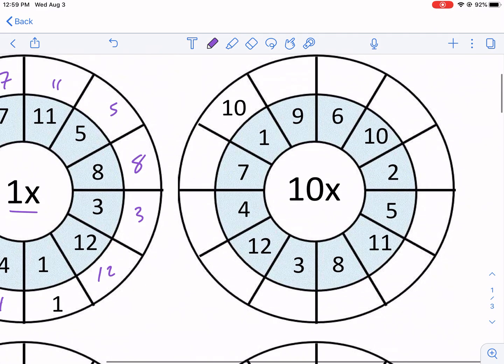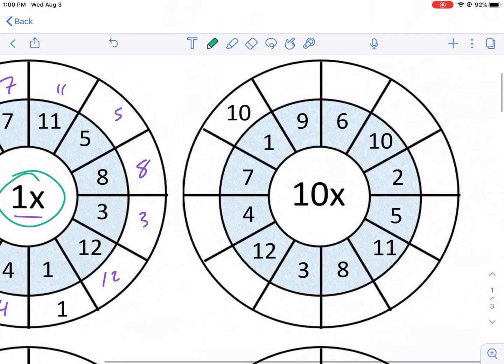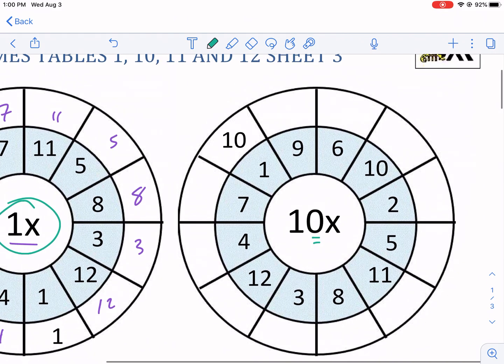So moving on to some tougher ones. Let me change to green. We have times 10. Now this one's going to be very similar to times 1. The only difference is we're going to add a zero at the end of the problem, at the end of the numbers. So we have 90 here for this guy, 60, 100, 20, because there was already a zero.